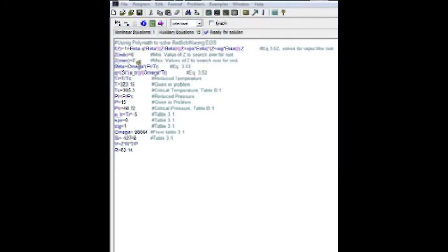Next, we enter a range of Z values over which the program is going to look for a solution. I set my minimum to 0 and my maximum to 2. Next, I've entered in the formulas from the previous problem for beta and Q.